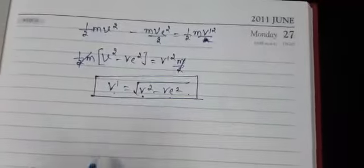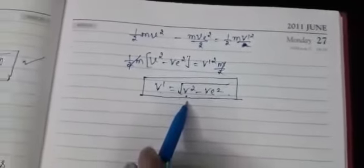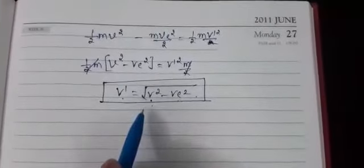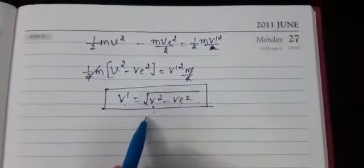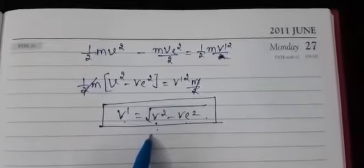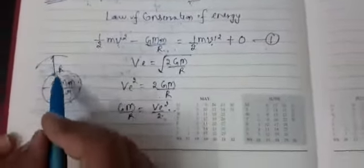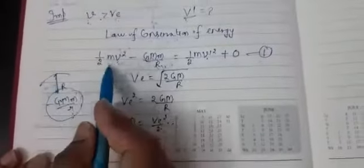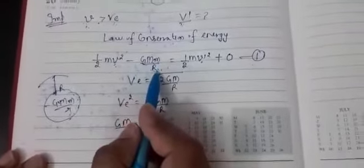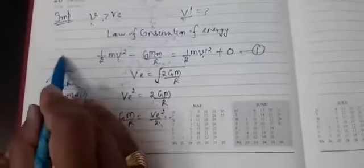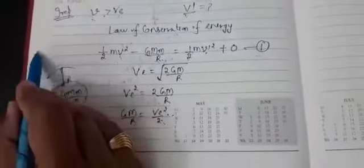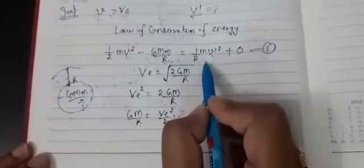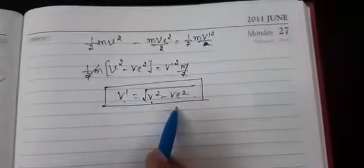Learn this expression. If you cannot remember it directly, use the law of conservation of energy: total energy (kinetic + potential) at surface equals kinetic energy in space. By comparing the expressions for work done and kinetic energy, we get the escape velocity expression.